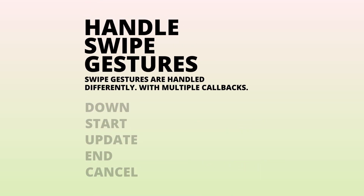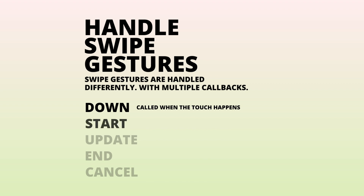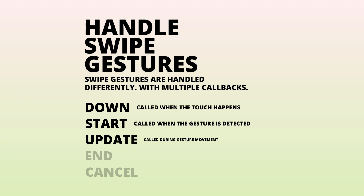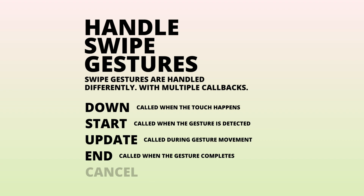Those are the singular touch events. You can also handle swipe gestures — there are multiple callbacks for each gesture. The down function is called when the touch happens, the start function is called the first frame the swipe is detected, and the update is called during the swipe movement.